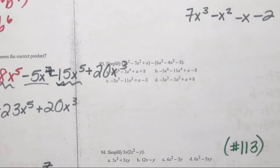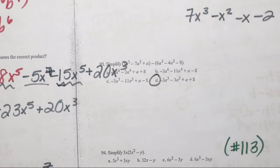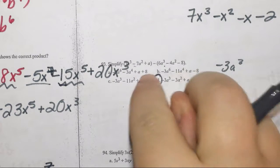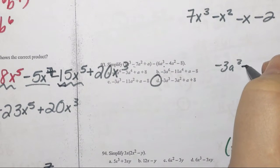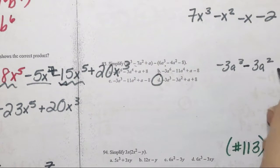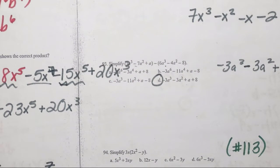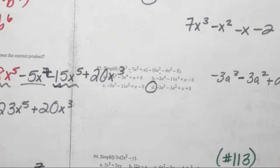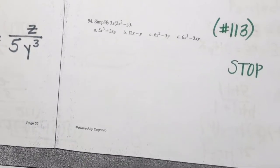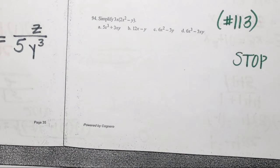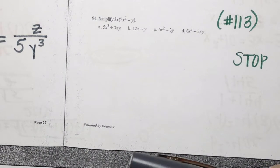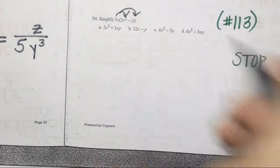93 is D. 3 minus 6 is negative 3. Negative 7 minus negative 4 is negative 3A squared. 94 is D. Everybody gets a point. And it is D.